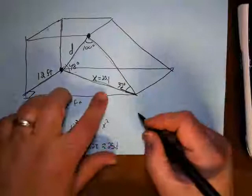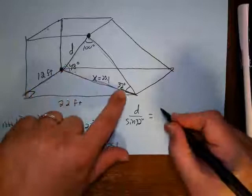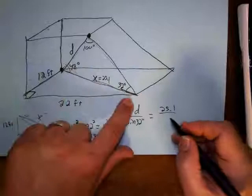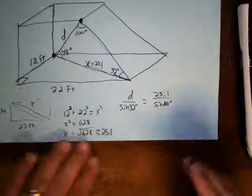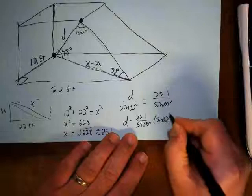So what I have here is that I want to get this diagonal. And that is to 32 degrees or to the sine of 32 degrees as this side here, that's actually a diagonal of the base, is to the sine of 100 degrees. So I have that. So now d is equal to 25.1 sine of 100 times sine of 32 degrees.